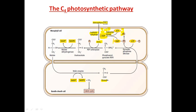Bicarbonate then reacts with phosphoenol pyruvate in the presence of PEP carboxylase enzyme. This carboxylation step synthesizes a four-carbon compound — oxaloacetate. Oxaloacetate, in the presence of malate dehydrogenase and NADPH, is converted to malate (malic acid), releasing NADP+. The malate is then transported through plasmodesmata.